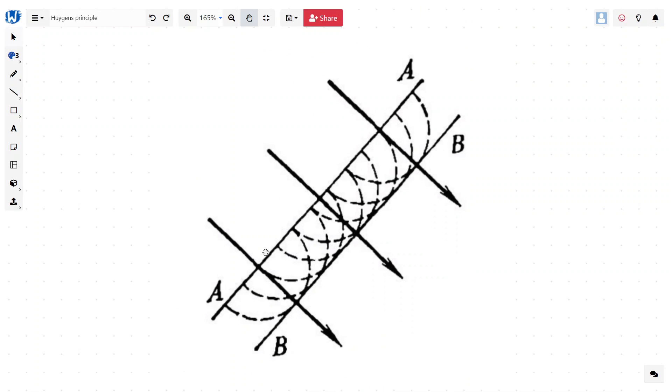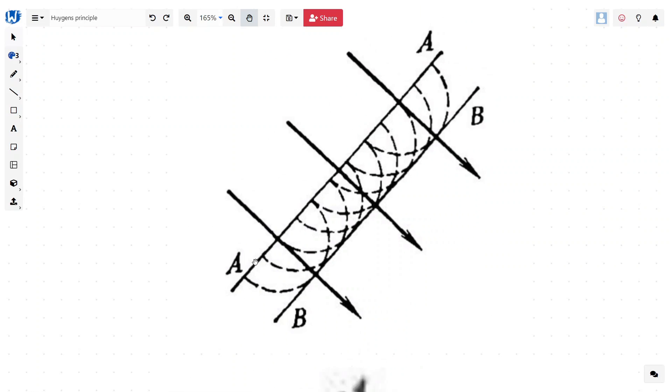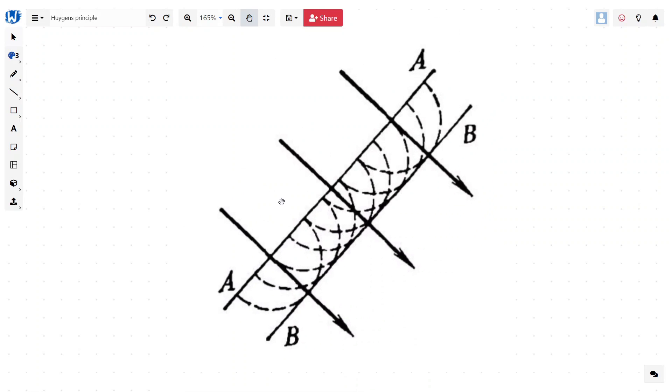Suppose we have light rays which are parallel to each other and coming like this, all of them hit this envelope AA or a plane AA at the same point, at the same time.